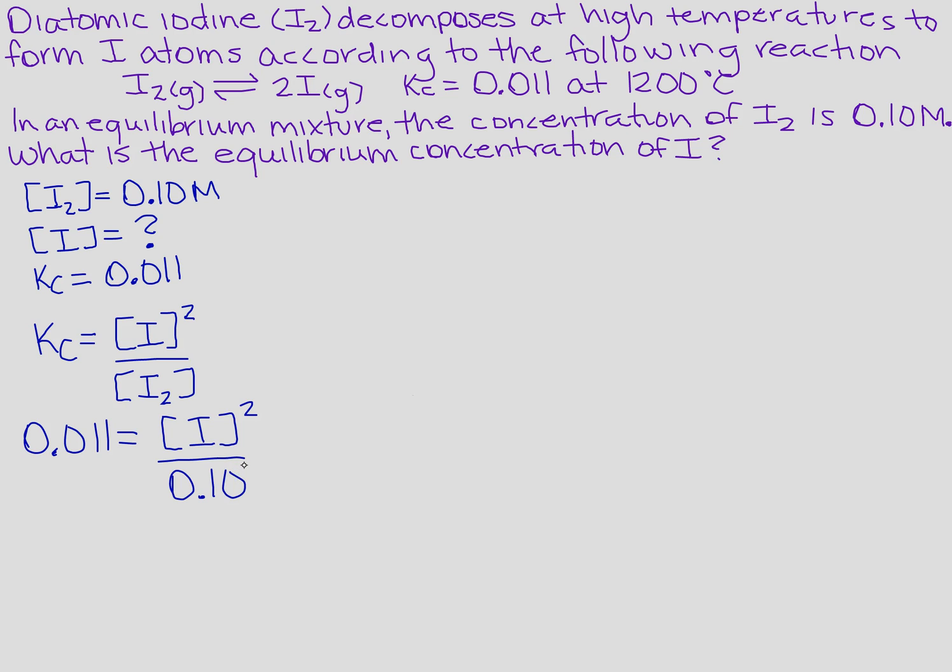So I need to solve for the I squared, and if you recall, we're going to cross multiply and set equal. So that's going to give me 0.011 times 0.10, and that's going to equal the concentration of I squared.